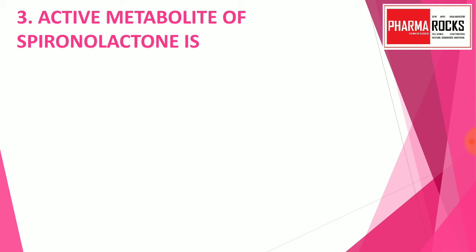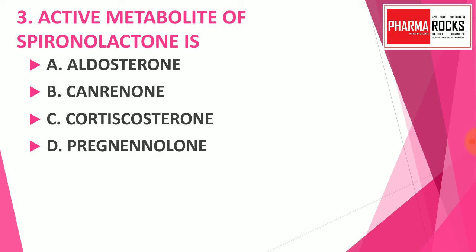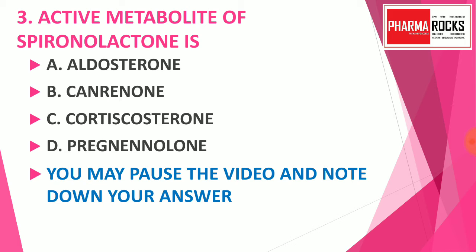Question number 3: The active metabolite of spironolactone is — option A: aldosterone, option B: canrenone, option C: corticosterone, option D: pregnenolone. You may pause the video and note down your correct answer. The correct answer is option B: canrenone. Active metabolite means the active form of that drug, and spironolactone's active form is canrenone. Drugs and their active metabolites are usually asked in competitive exams, so this is an important topic.